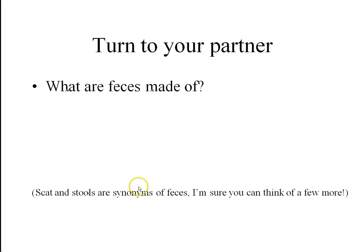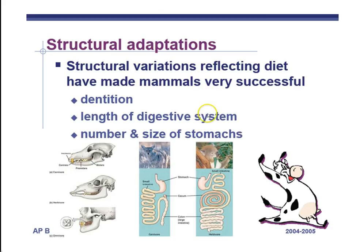Scat and stools are other names for feces — remember, lots of nitrogen in those for plants. All right, structural adaptations. Last thing we have to take notes on: dentition, which is basically teeth; length of digestive system; and size and number of stomachs. We're going to talk about each in turn.